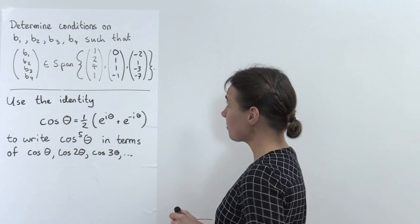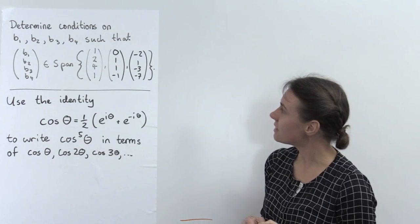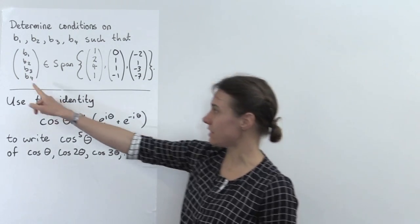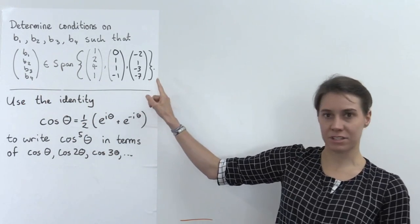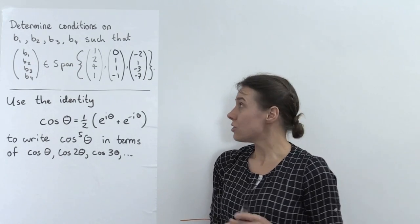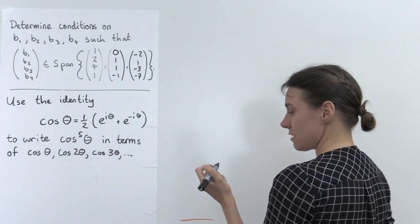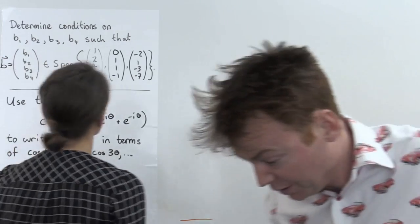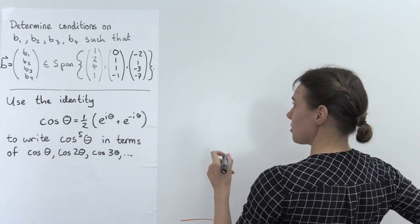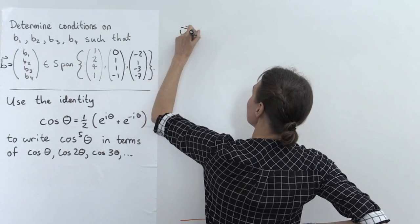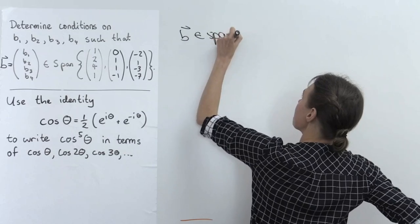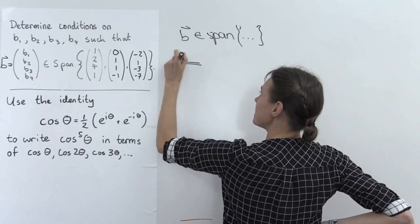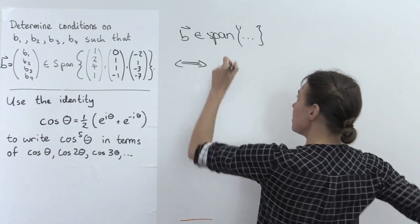The first question asks us to determine conditions on b1, b2, b3, b4 such that this vector with the b's as entries is in the span of these three vectors — each with four entries. Let me denote this vector by b for shorter notation. So, b is in the span of these three vectors — when is this the case?